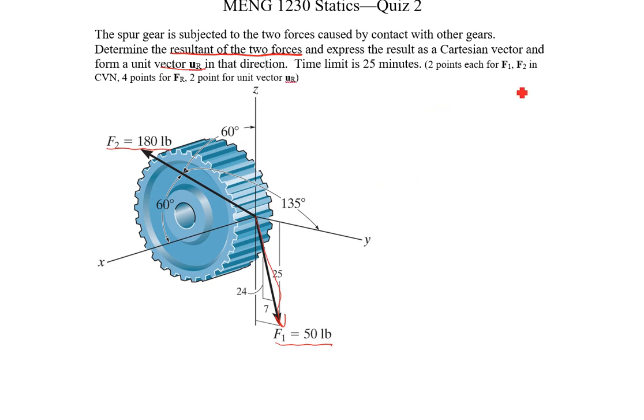I've given you a couple ways that we're earning points. We get two points for each of the original vectors in Cartesian vector notation, and then we're getting four points for the correct resultant vector, and then the unit vector in that direction gets us another two points.